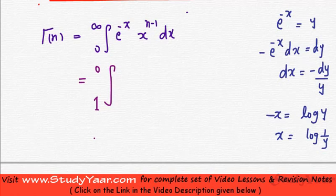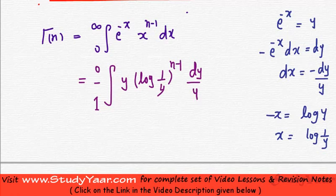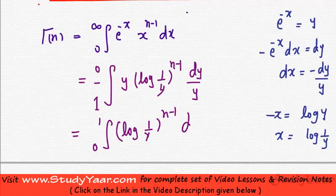E raised to power minus x is y. x is log of 1 upon y raised to power n minus 1, dx is minus dy upon y. You have a y over here. You have a y over here. So, these would be eliminated. And since you have negative 1 to 0, I can write it as positive 0 to 1 log of 1 upon y raised to power n minus 1 dy.